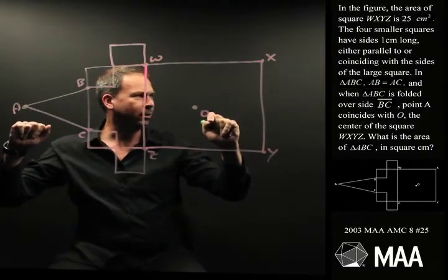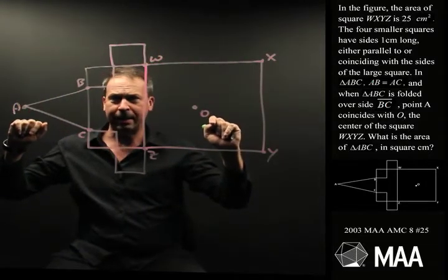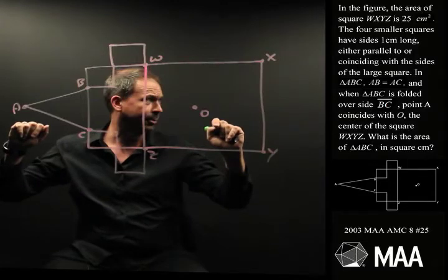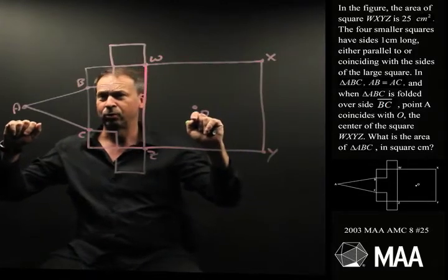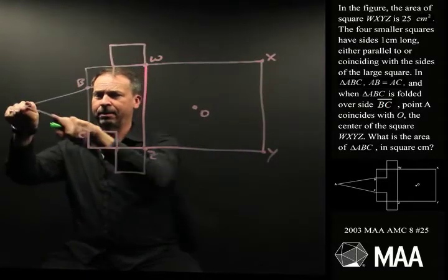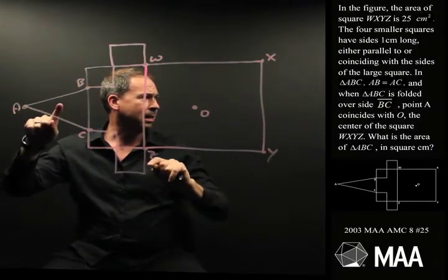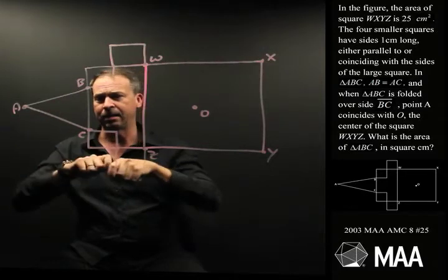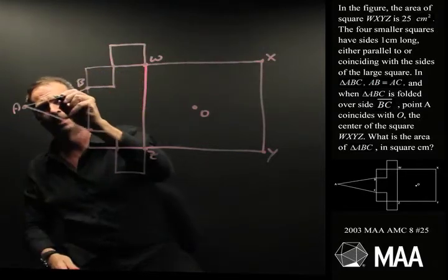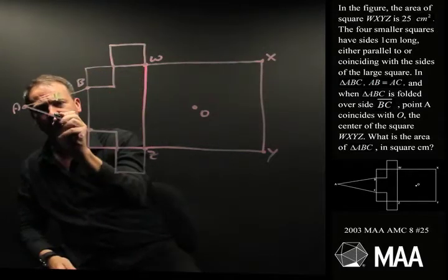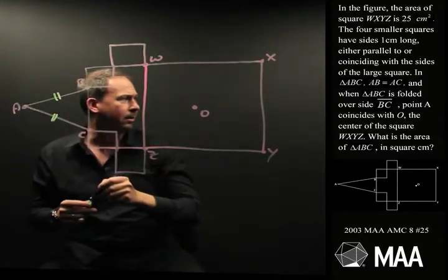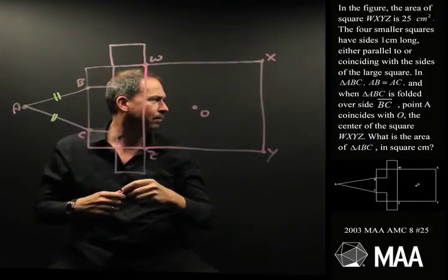In triangle ABC — this question keeps going on and on — triangle ABC, there it is: AB equals AC. Maybe I'll mark that. This length here is the same as that length there.